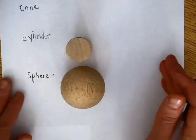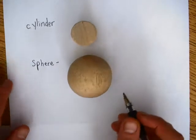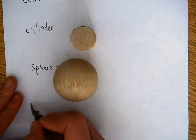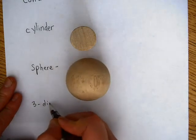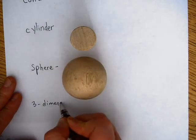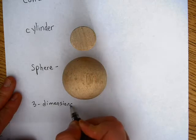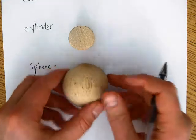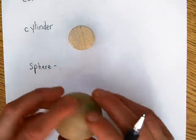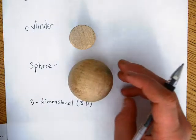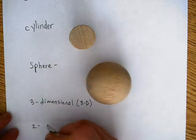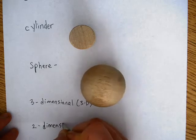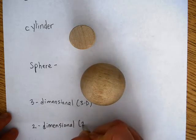The next vocabulary word is three-dimensional. Three-dimensional is basically what you hear called 3D — it kind of pops out at you. It's something that you can pick up and play with and use. As opposed to two-dimensional, which is something that's flat on the paper. We can't pick up something that's two-dimensional, but we could pick up something that's three-dimensional.